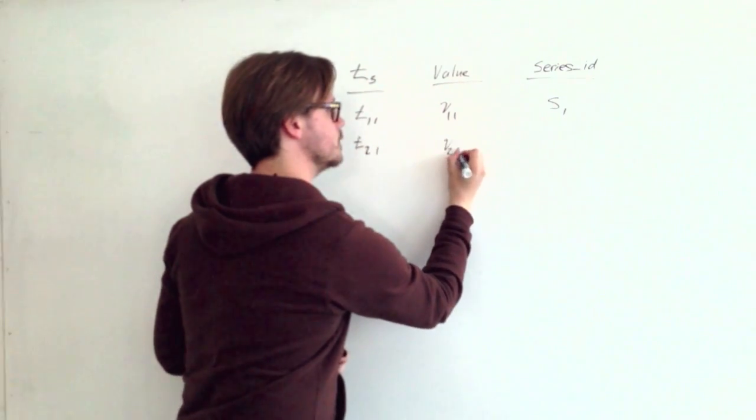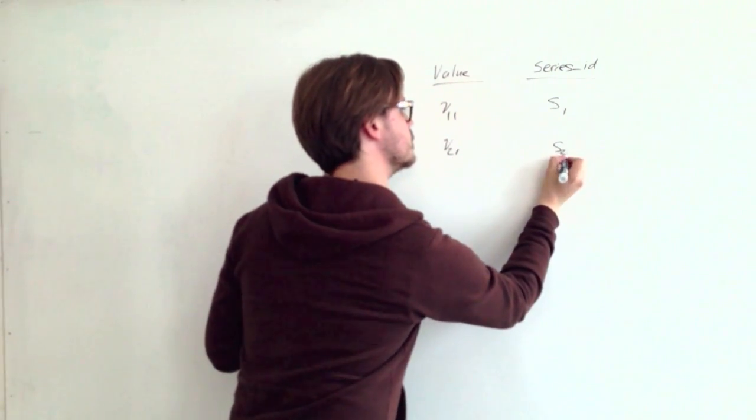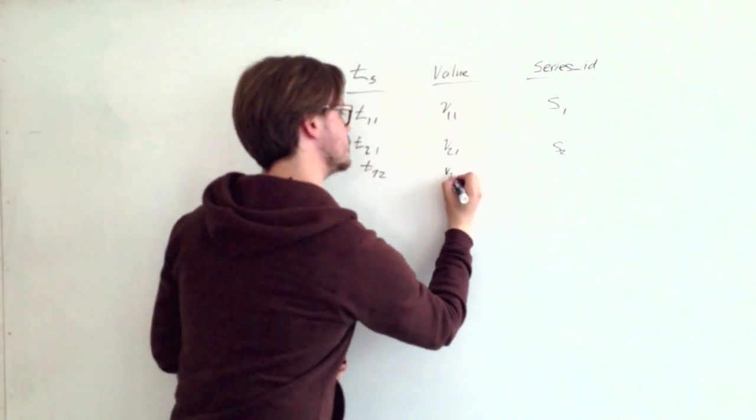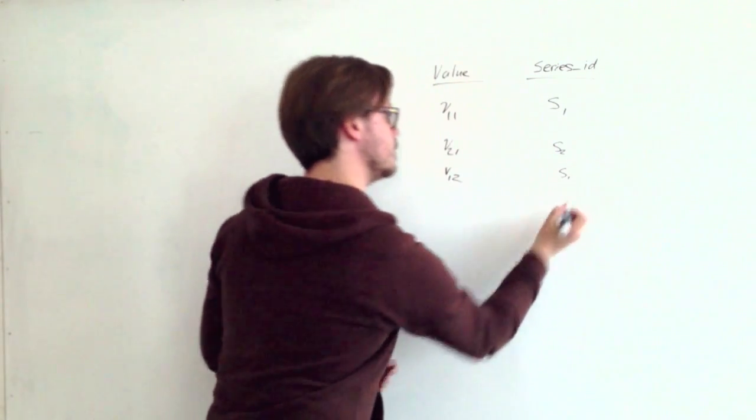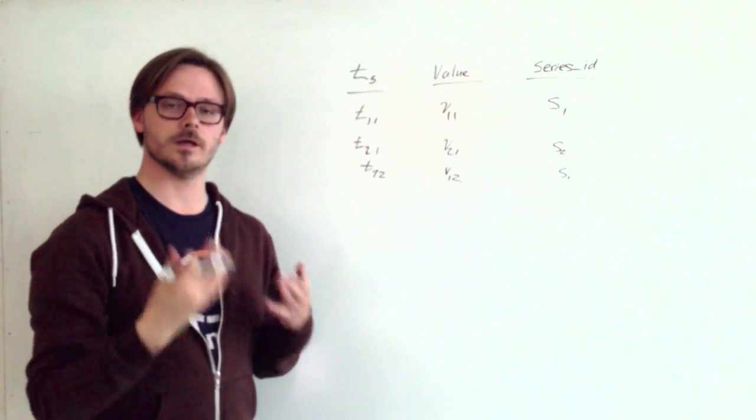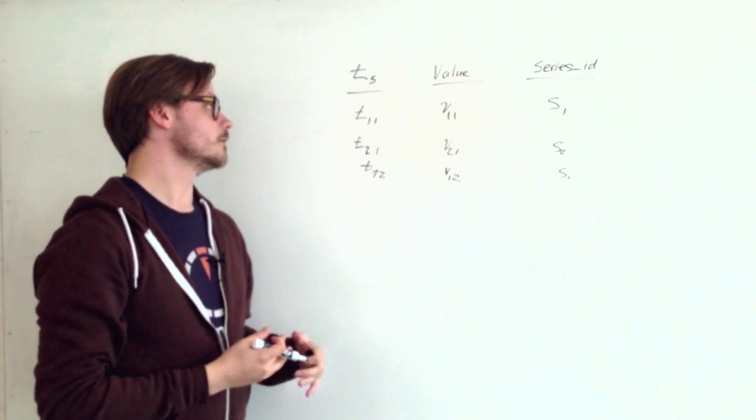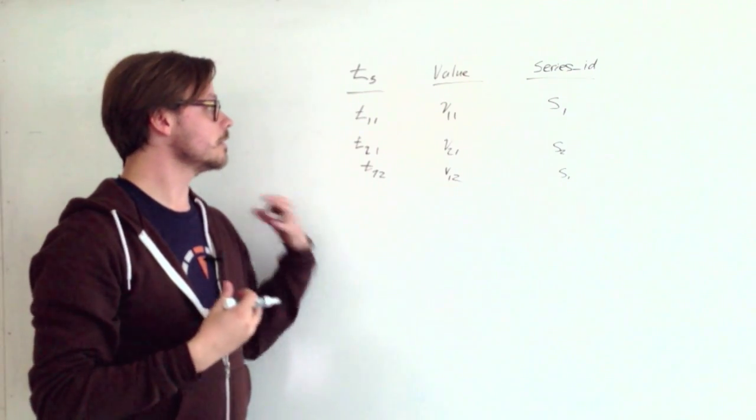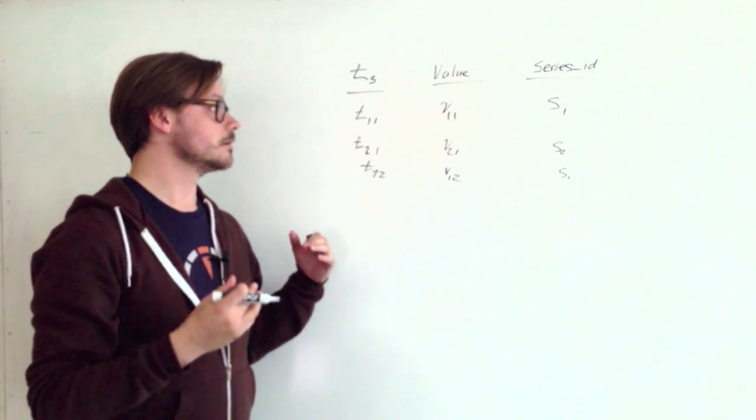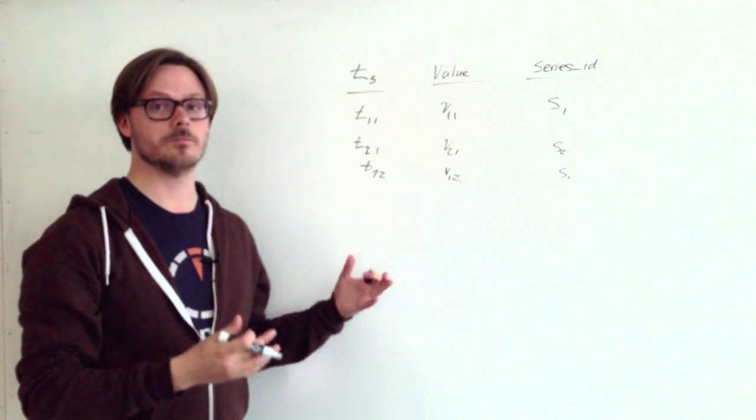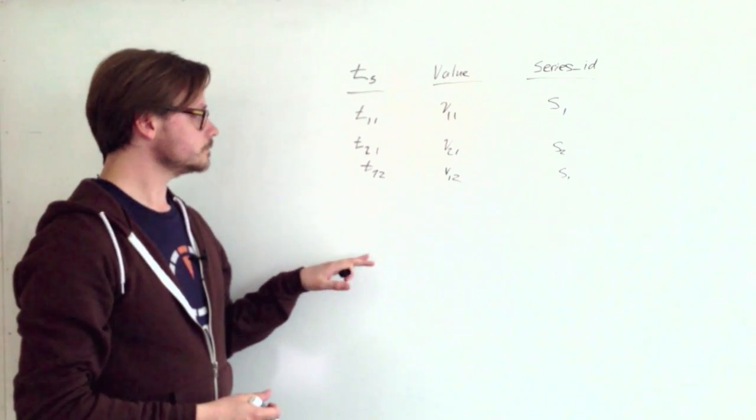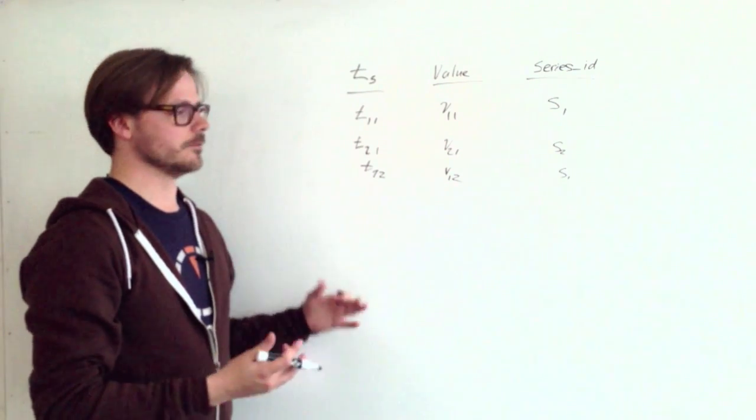So the next row could have a value for series two, and again, we could have another value for series one. So what's great about this is it's really simple, and you can use a lot of the SQL queries that you're familiar with. For instance, if you wanted to read out a month's worth of data and get the daily average, you could use a simple group by to do that computation. So this is great.